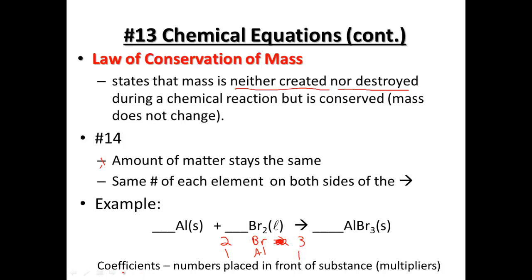So what we're going to do is add coefficients — multipliers placed in front of each substance. If we have two on this side and three on this side, the lowest common denominator between two and three is six. Three times two gets us to six bromines, and on this side three times two also gets us to six, but it changed the number of aluminums from one to two. So we put a two in front — two times one gets us to two. Our reaction says two aluminums plus three bromines produces two aluminum bromides: a two to three to two ratio.